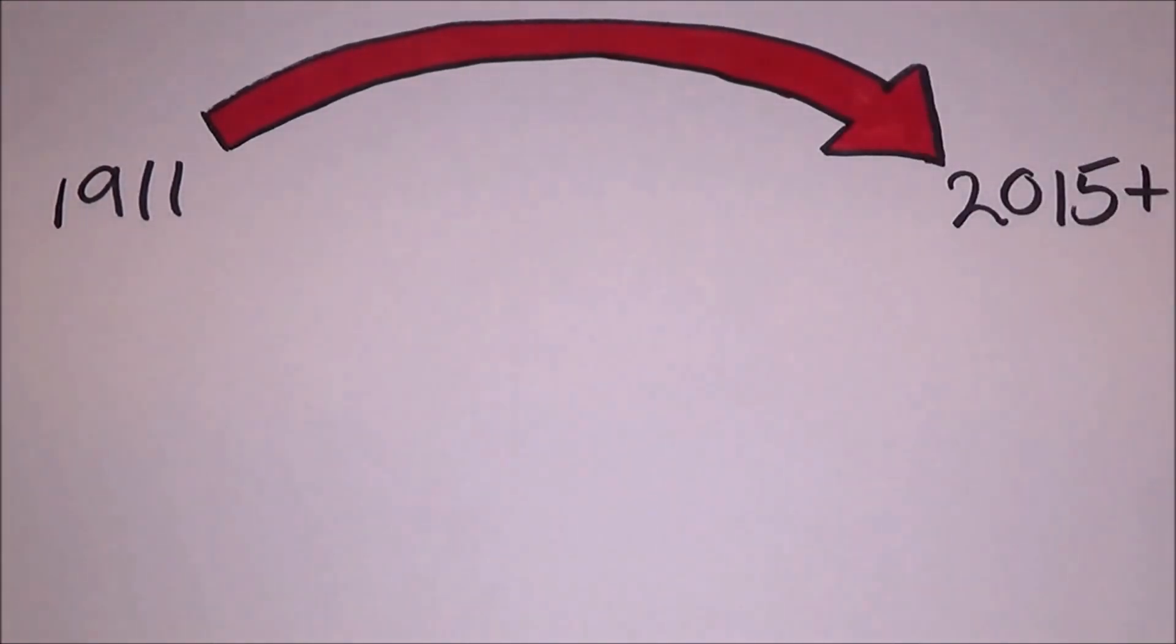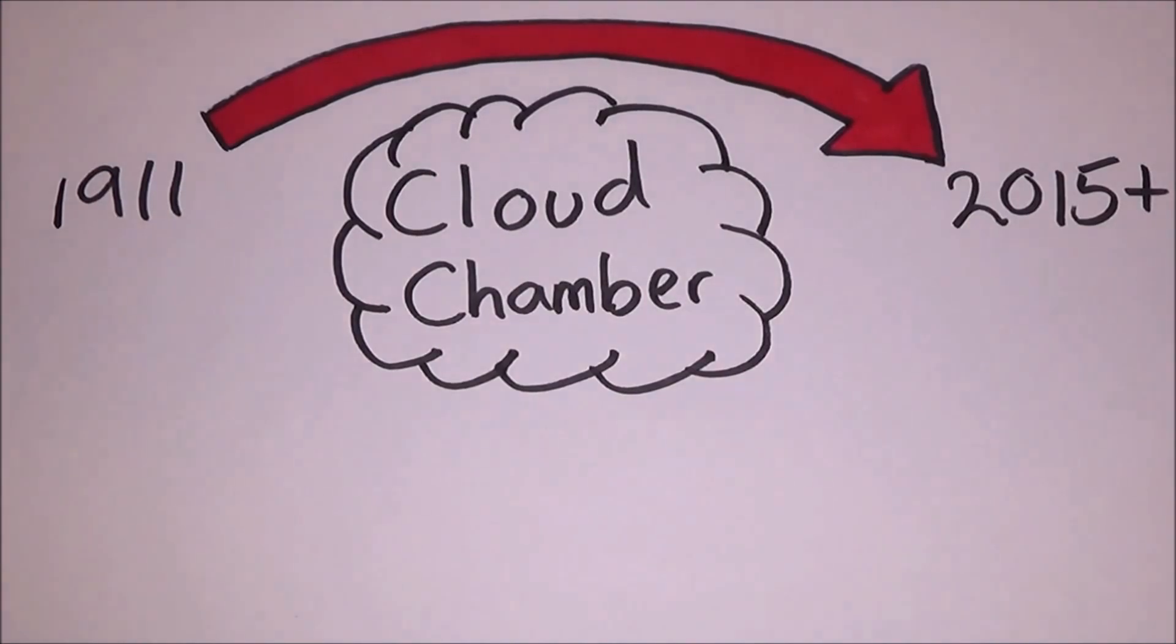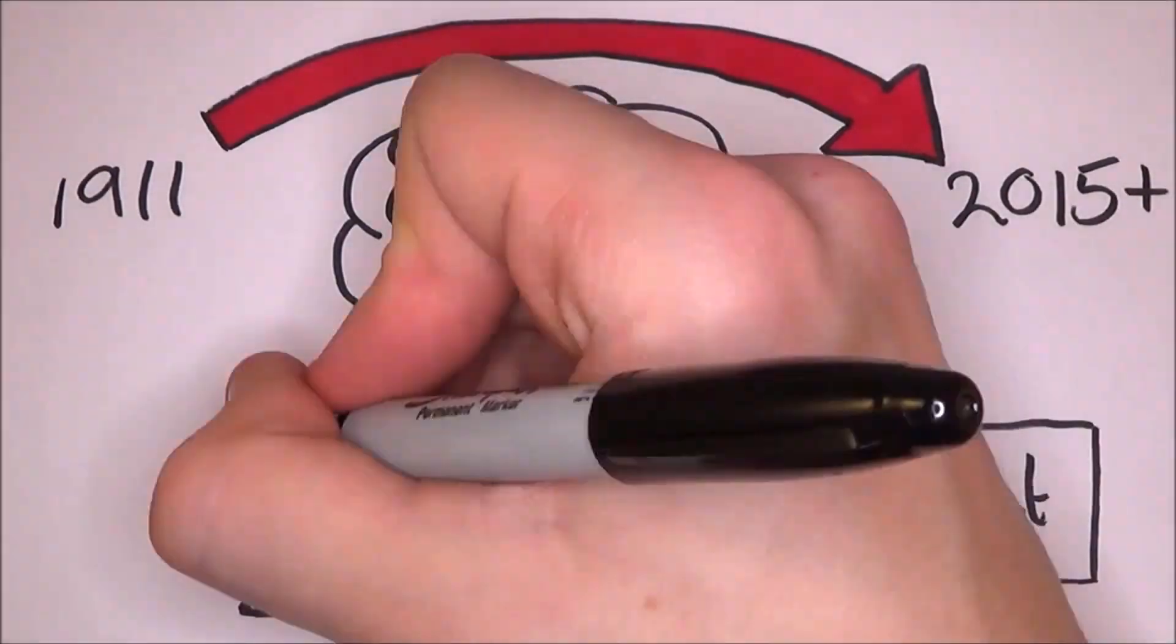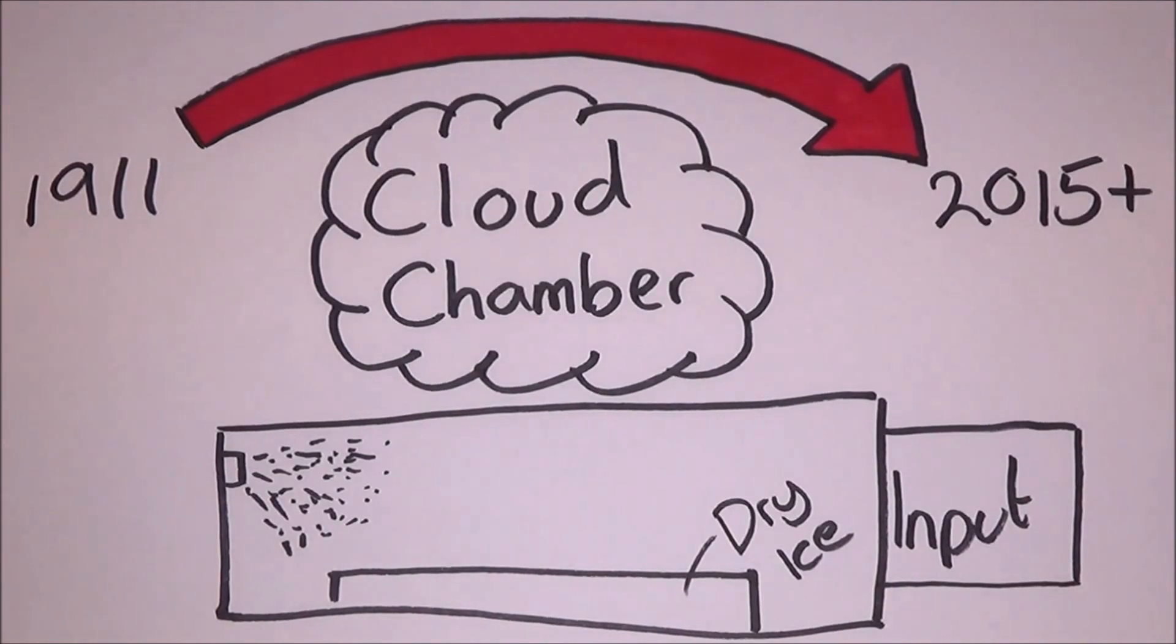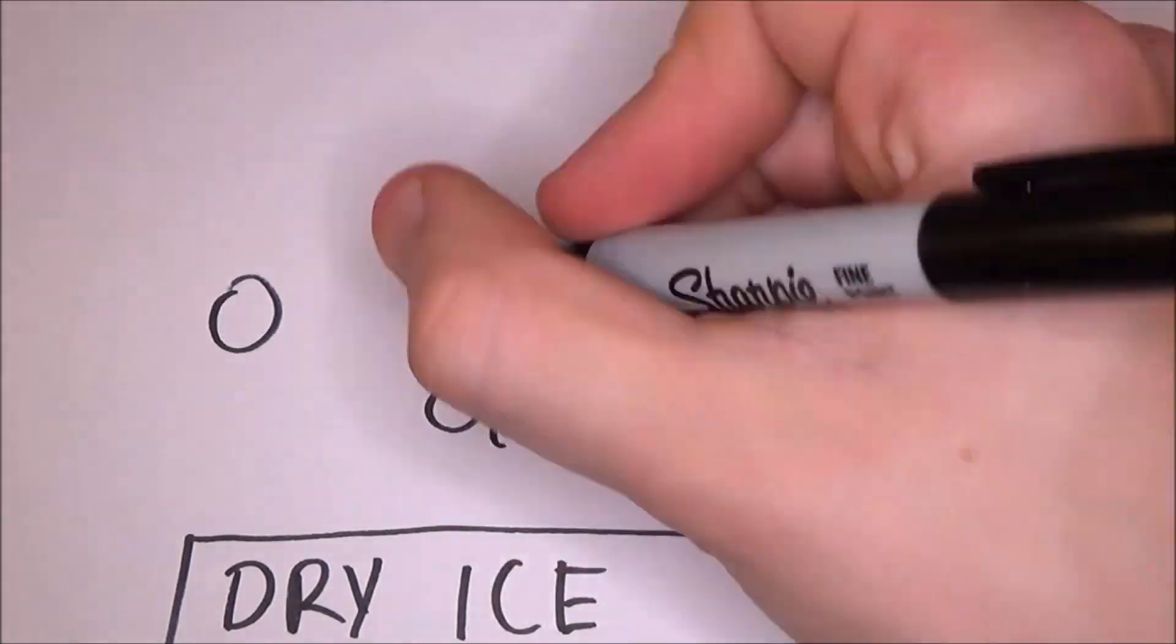A simple cloud chamber consists of a sealed environment, a particle input (normally a radioactive source), some dry ice or a cold plate, and some kind of alcohol source. The lightweight methanol vapor with the dry ice will supersaturate the chamber.